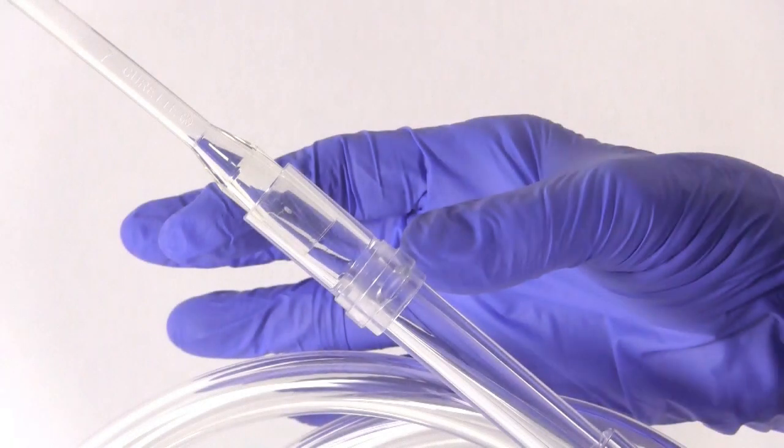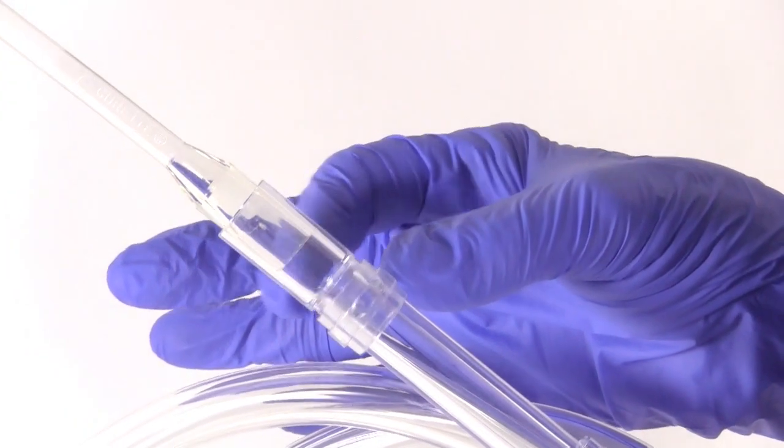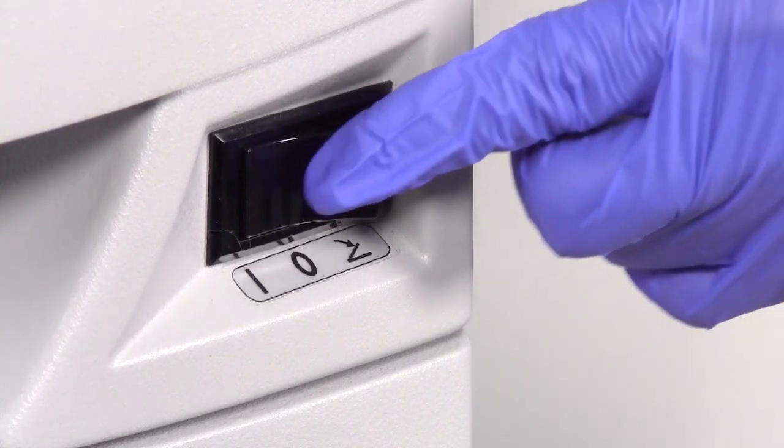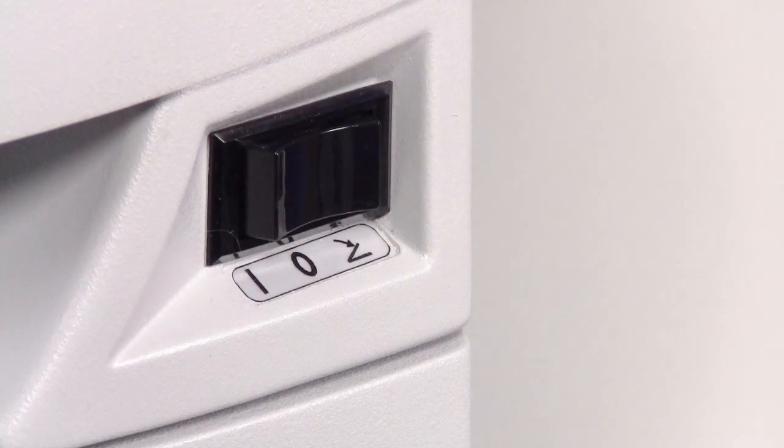The sliding ring on the collection tubing may be used to control the suction. If the cannula adheres to the uterine wall or becomes clogged, release the suction by moving the sliding ring from the closed position to the open position to decrease the vacuum prior to removal of the cannula. At the end of the procedure, always turn the unit to the off position.